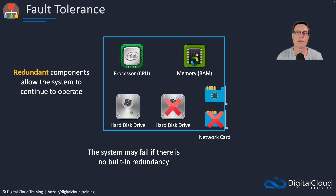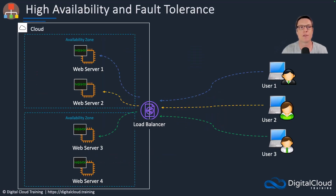A lot of the fault tolerant components — things like the power supplies in the servers, the redundant power sources for the data center, and the redundant networking components in the underlying infrastructure layer — AWS takes care of all of that. What we can do is enable high availability on top of those fault tolerant components of the underlying infrastructure. Let's have a look at how we can implement high availability on top of that fault tolerant infrastructure that AWS provides.